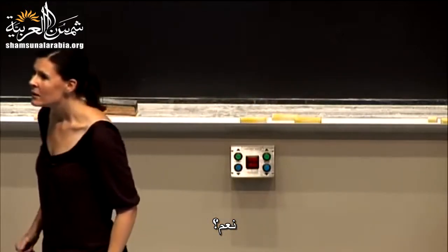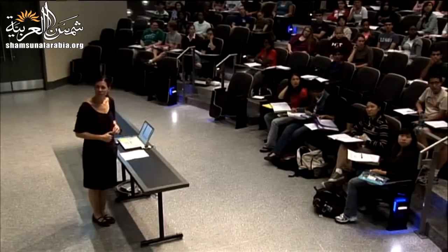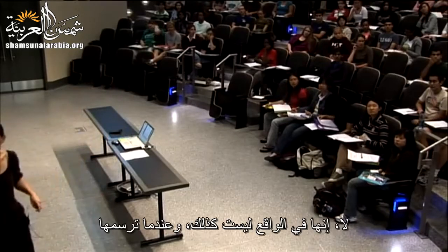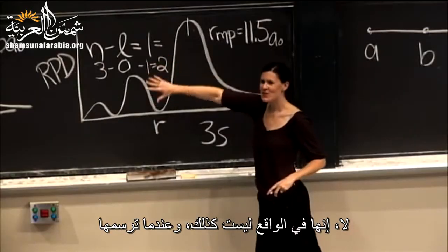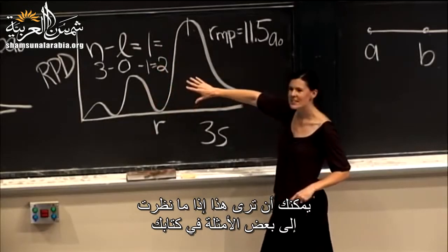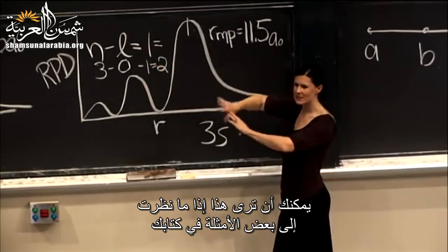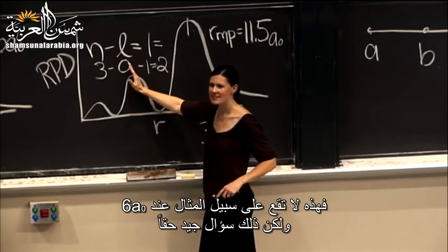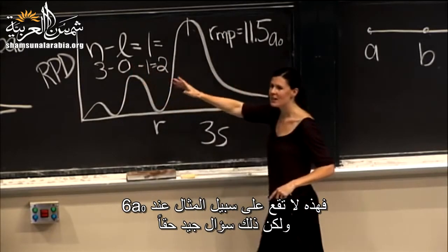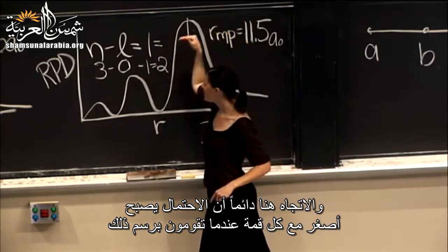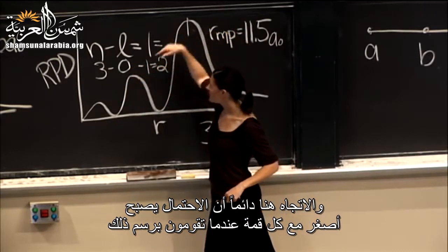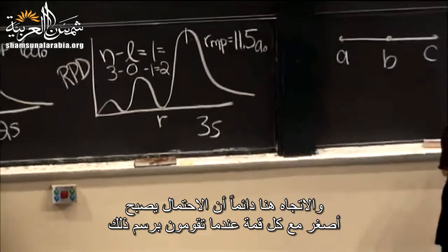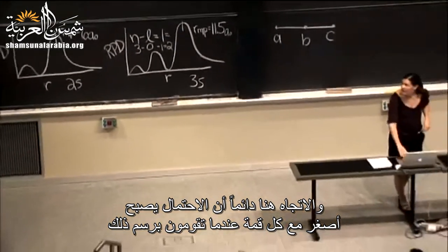Should the lower peaks fall at the lower radii? No, they actually don't. You can see this if you look at examples in your book - for instance, this doesn't fall at 6 a-naught. But the trend is that the probability gets smaller with each successive peak as you draw them.